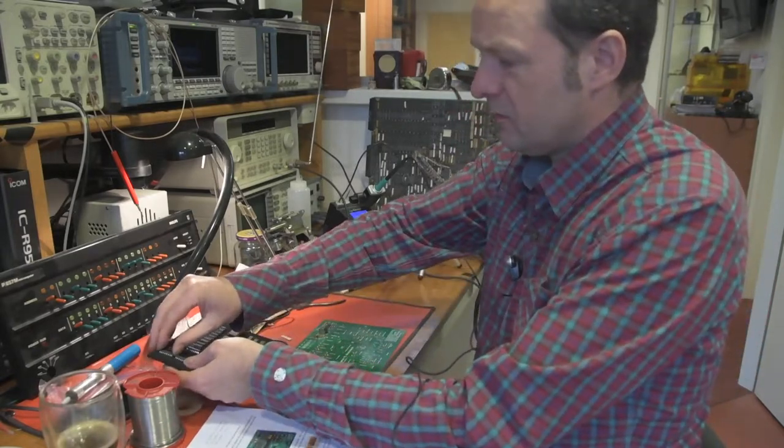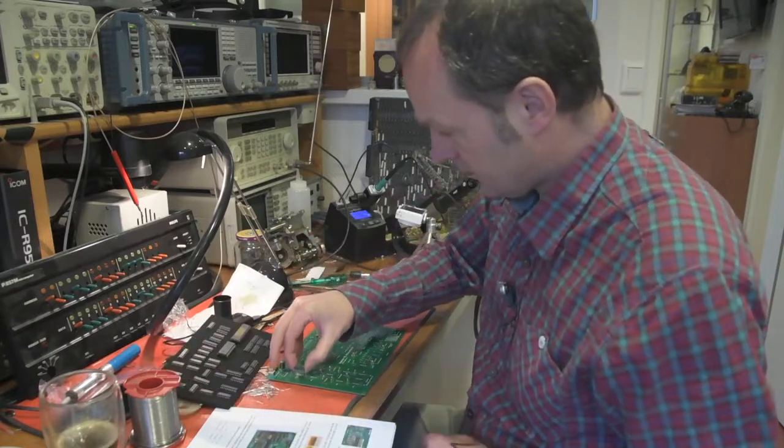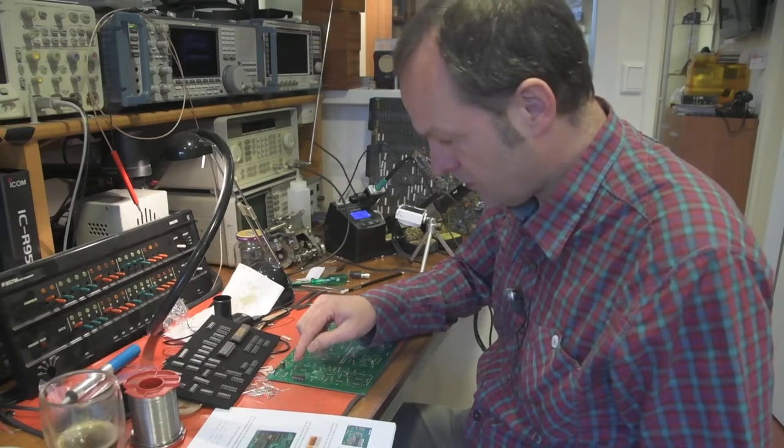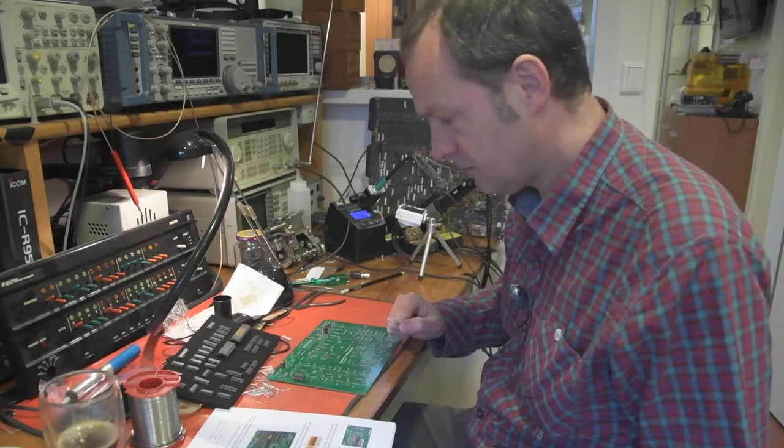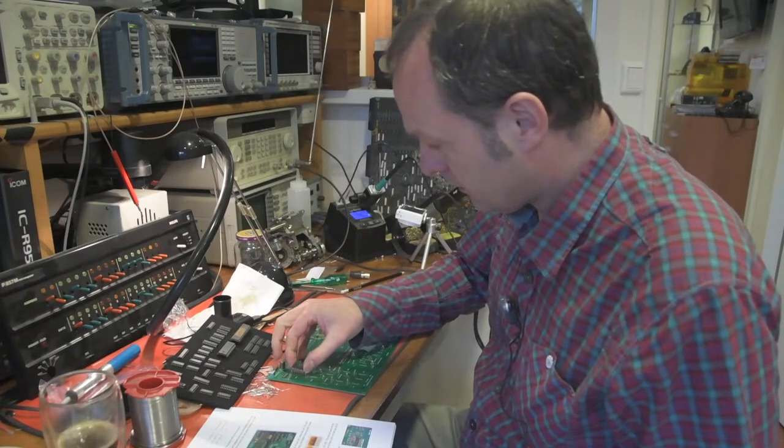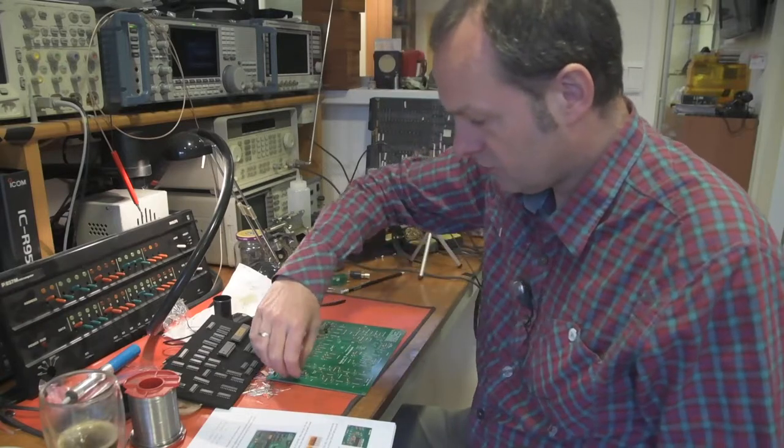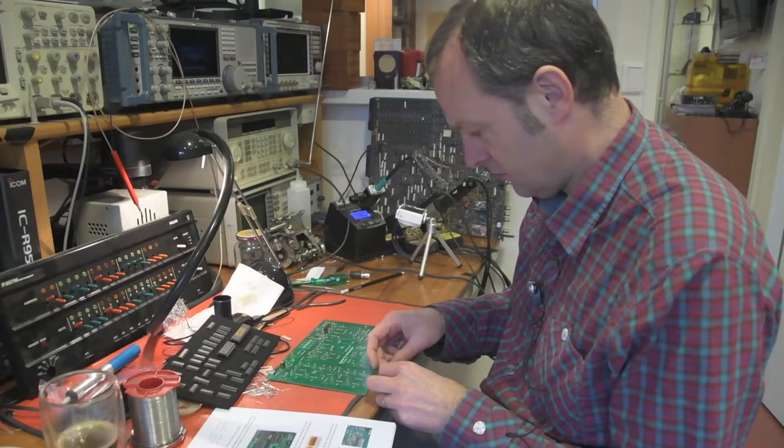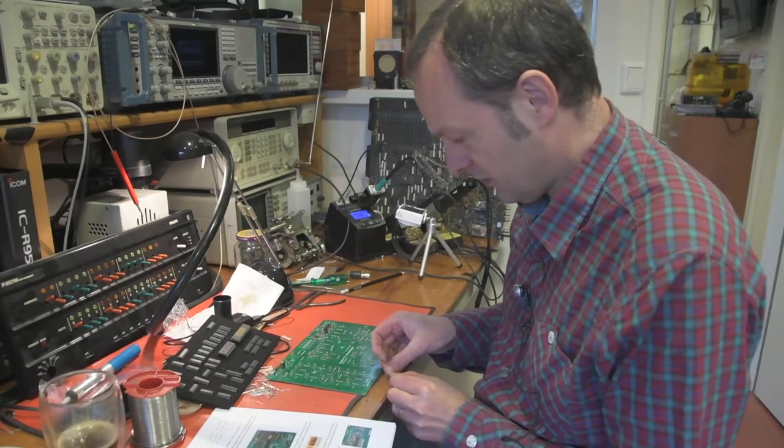When soldering in a component, make sure that the orientation is correct. So there's this half moon shape on the component that's also present on the board. And again, they won't fit right away. So we need to use the table to straighten the pins a little bit.